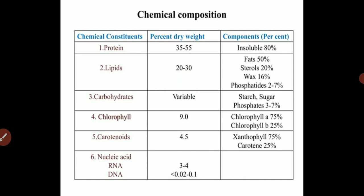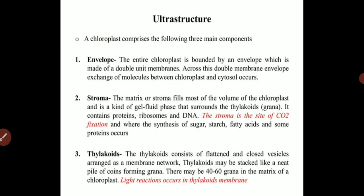This slide talks about the chemical composition of chloroplast. The chloroplast contains proteins, lipids, carbohydrates, chlorophylls, carotenoids, and nucleic acids in different ratios. All the requirements of the chloroplast can be fulfilled with these chemical constituents, yet it is called a semi-autonomous organelle because it is also dependent on the nuclear genome.